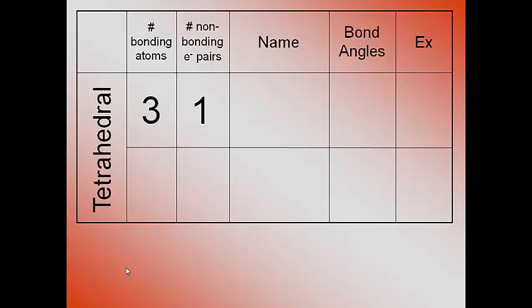Now remember, the non-bonding electron pairs are those pairs of dots that you drew when you drew the Lewis structures on paper. So I'm looking at a molecule that has three bonding atoms and one non-bonding pair.